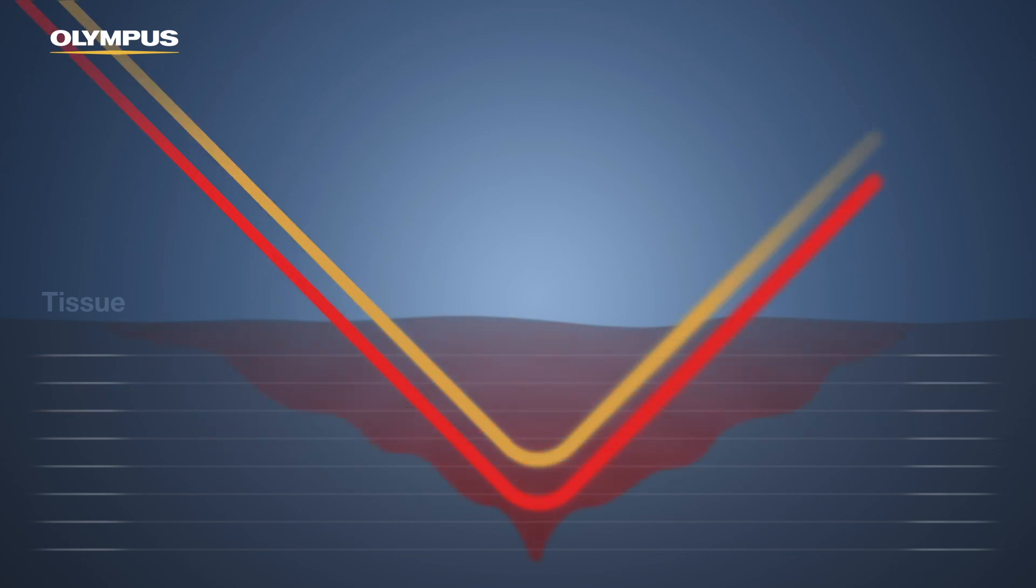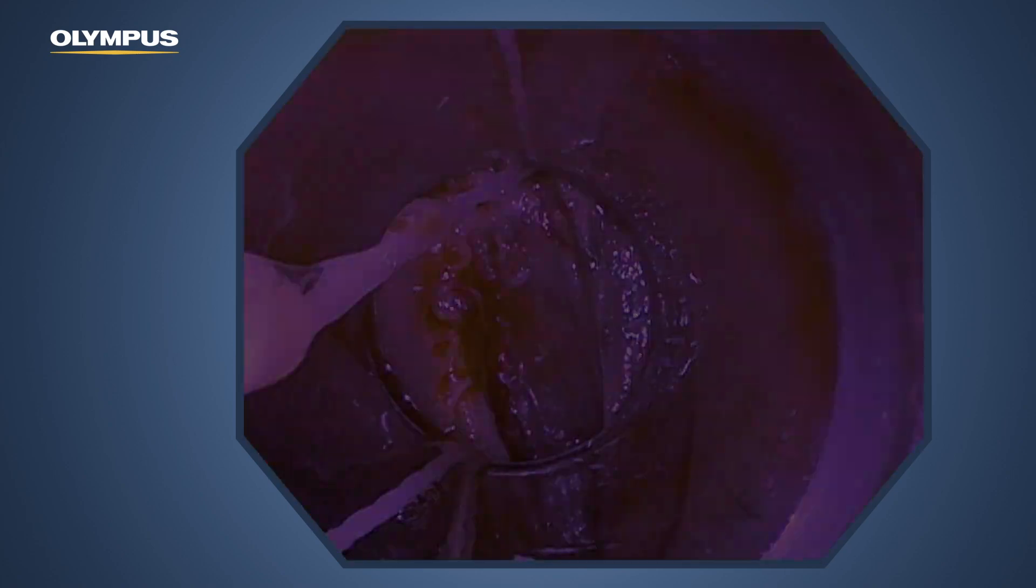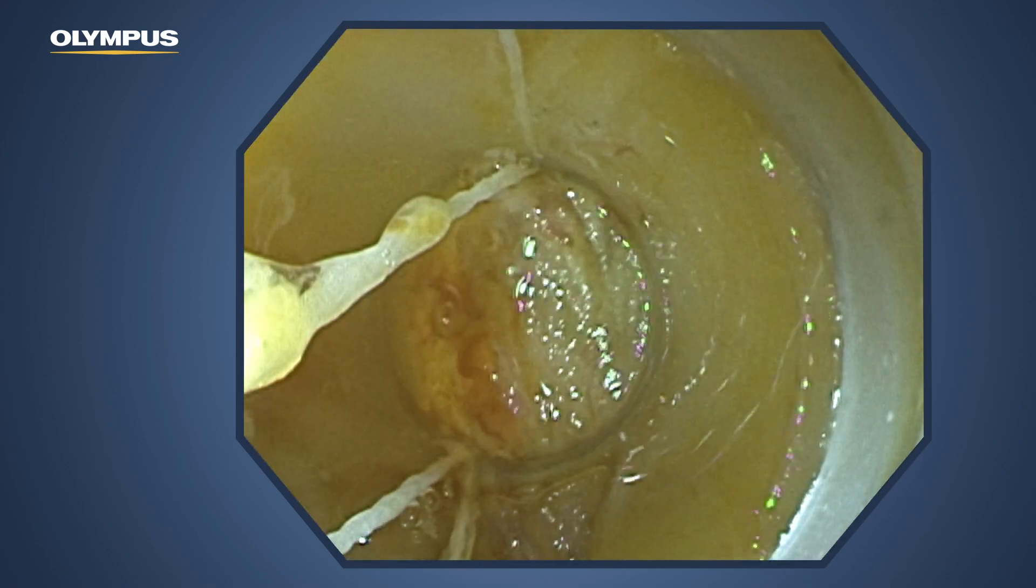If the amber light hits a bleeding point at which the blood concentration is very high, the amber light is strongly absorbed. The bleeding point appears darker and is therefore more visible.